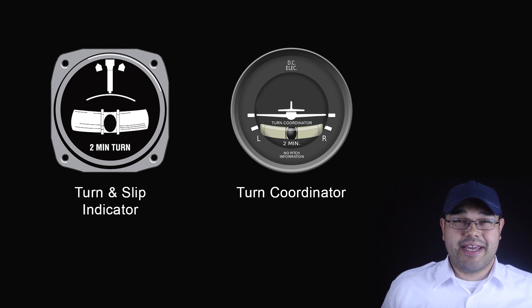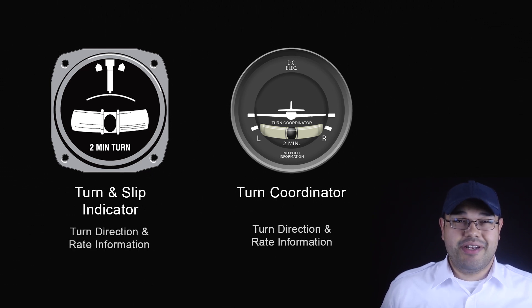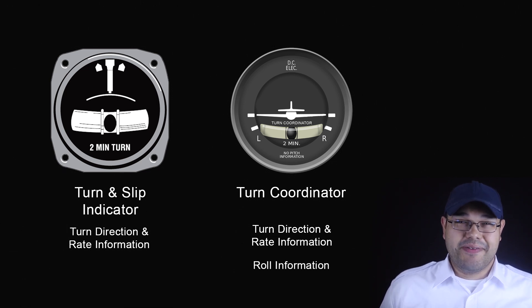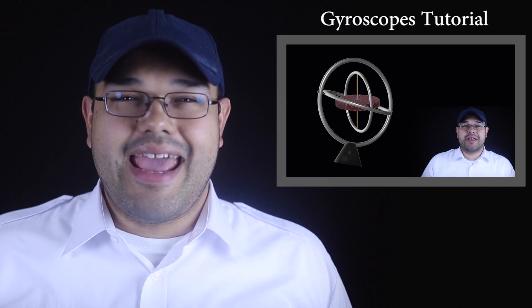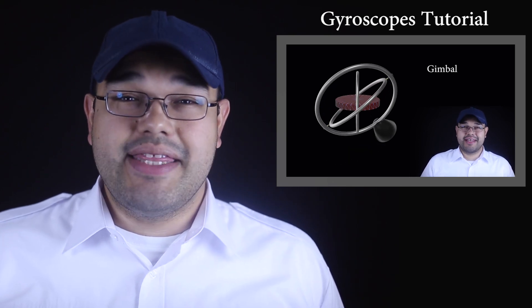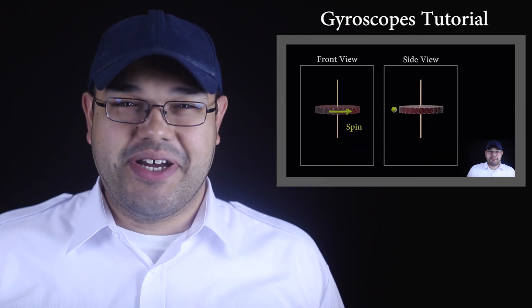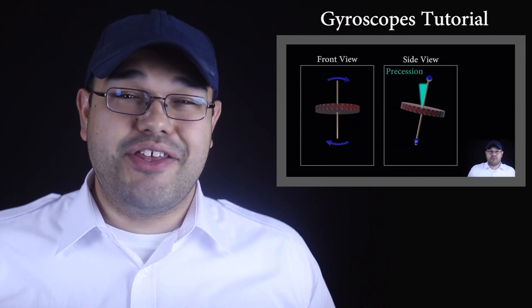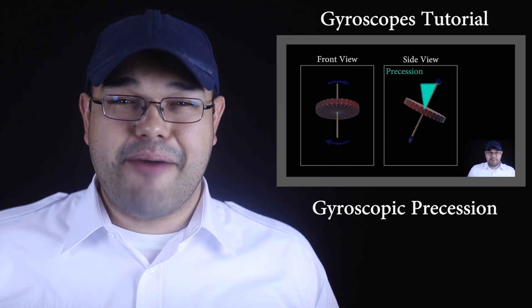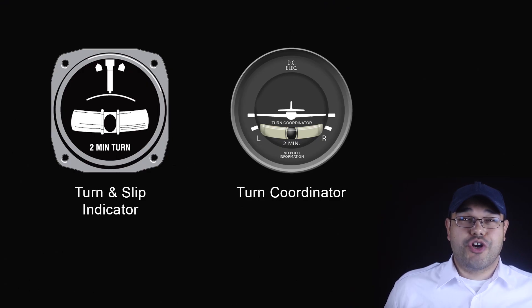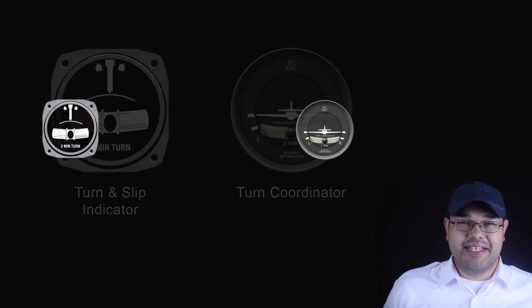The turn and slip indicator and the turn coordinator provide us with turn direction and rate information. The turn coordinator is also designed to give us some roll information. Both instruments are gyroscopic. In another video we talk at length about what a gyroscope is and how it works — you should probably watch that before this one. Of particular interest here is gyroscopic precession.